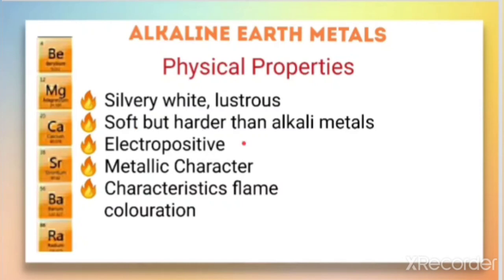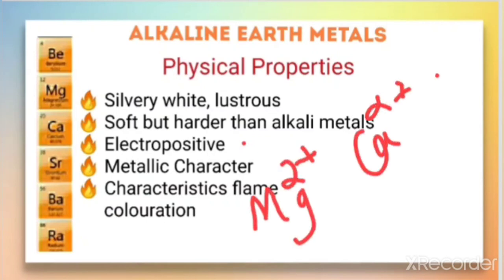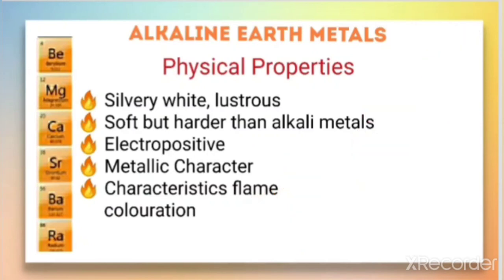They are electropositive in nature because they easily lose electrons to get stable, forming positive ions — magnesium forms Mg²⁺, calcium Ca²⁺, strontium Sr²⁺. Since they are all metals, they show metallic character.